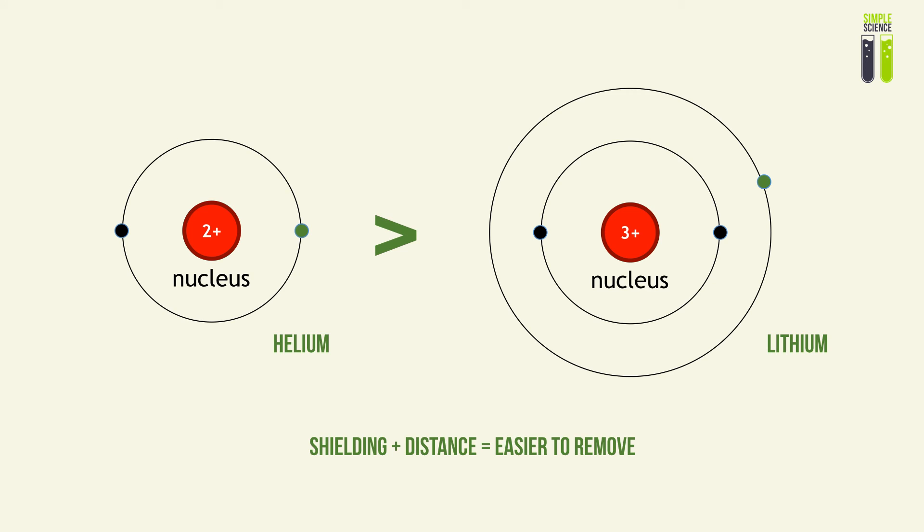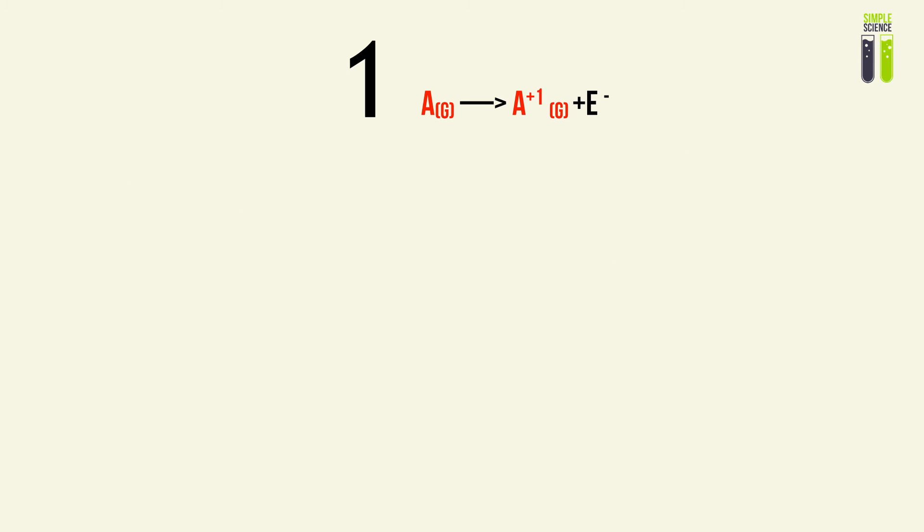So that is it. That's ionization energy for you in two videos. To quickly summarize the key most important things: ionization can be represented by this type of equation where on the right side there will be removal of an electron. This equation can be further extended for higher levels of ionization.